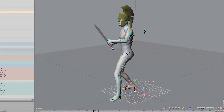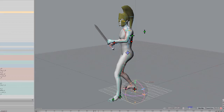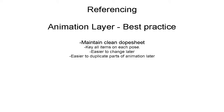On the animation layer, best practices are really more about maintaining a clean dope sheet. It's a matter of keying every element on every pose, which makes it easier to change later. This should be referencing the rigging layer and so forth.